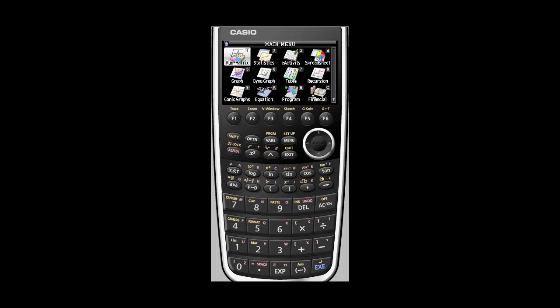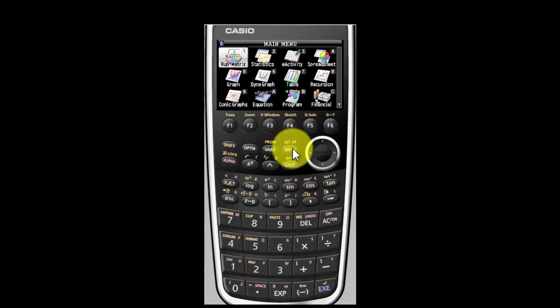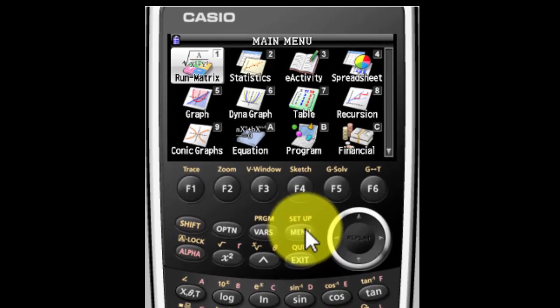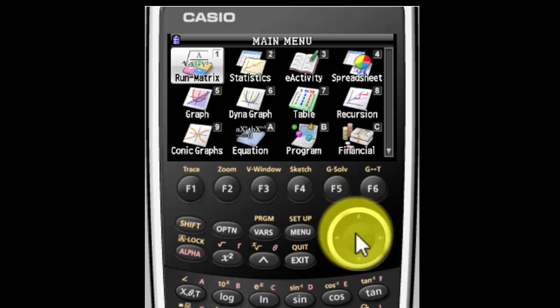First thing you're going to do is turn your calculator on. If you don't see this screen, go ahead and hit your menu button right here. That'll get you to this screen. Your calculator may look slightly different from mine. That's okay. Once you know how to work one Casio graphing calculator, you'll know how to work all of them.